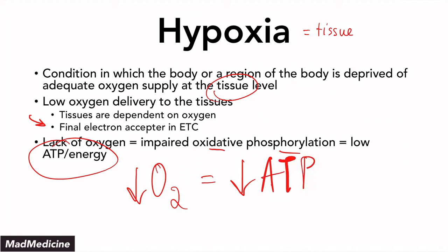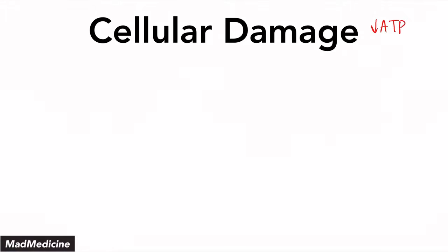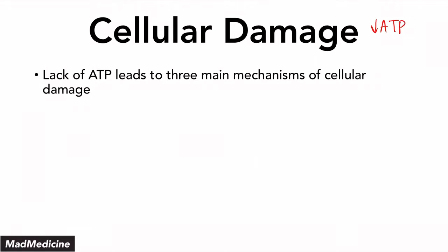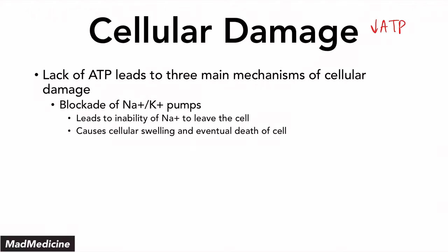Low ATP is essentially the mechanism of damage happening in hypoxia. Cellular damage can happen through many different mechanisms, but essentially it all relates back to ATP. If you have low ATP, your cell is not going to be able to function properly, and that is going to cause the cell to damage itself through many different mechanisms. The first: when you have a lack of ATP, you are going to end up blocking the sodium-potassium pumps.